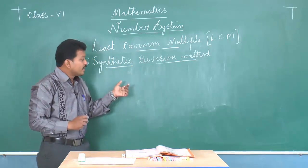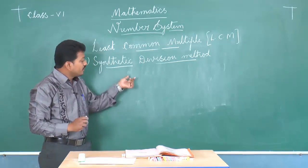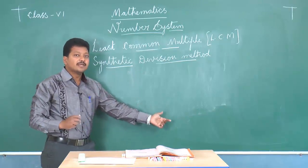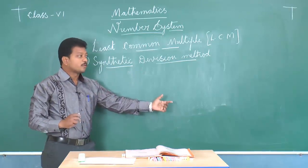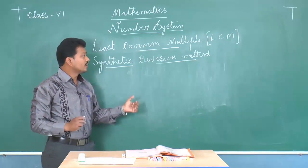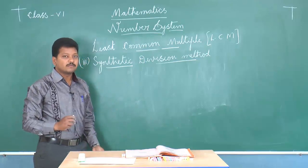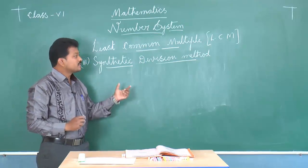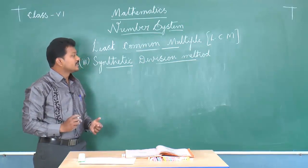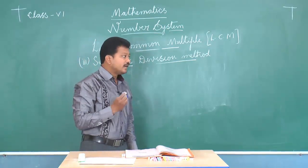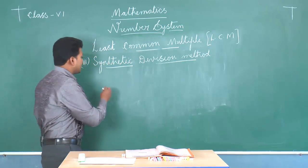Finally, we take all the divisors and multiply them together. The product is known as the LCM of the given numbers. This method is known as the synthetic division method. Let us go through an example.